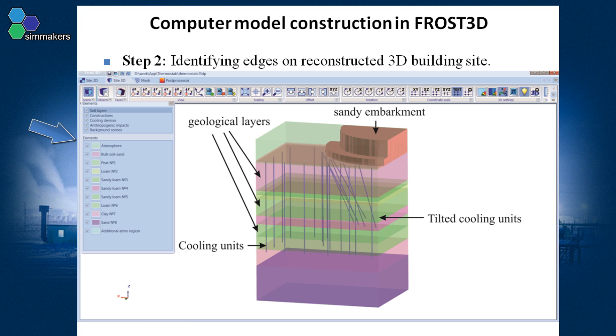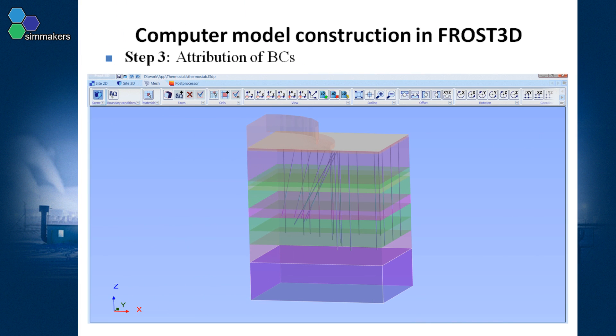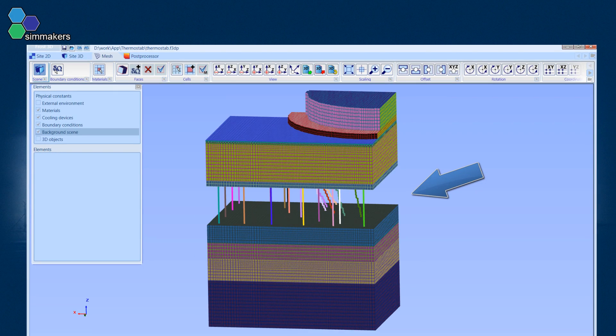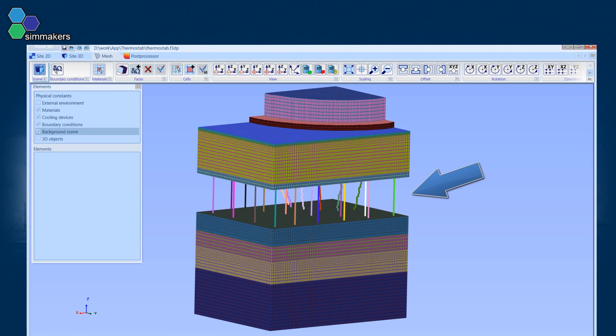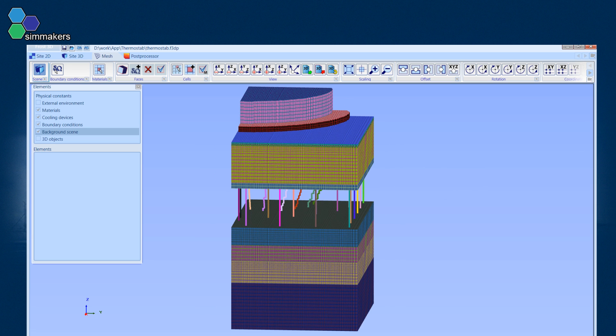The working conditions of the cooling devices are also set. In the third step, the computational mesh is created. Two intermediate soil layers are rendered invisible in order to demonstrate how the cooling devices are located inside the soil.